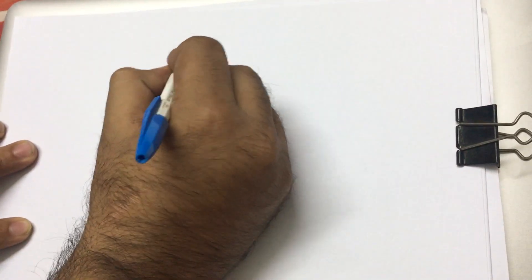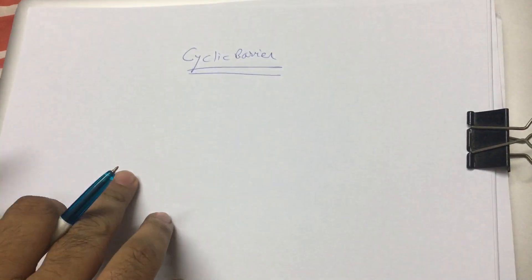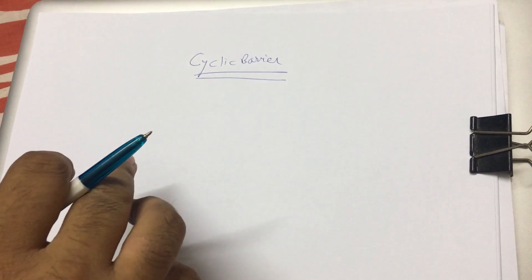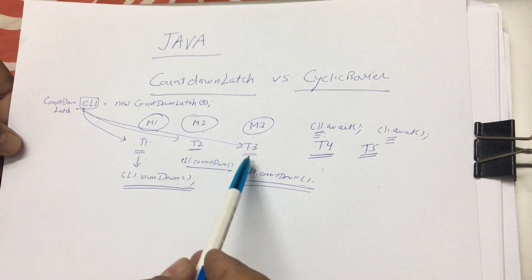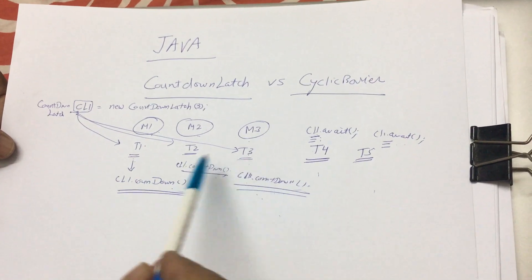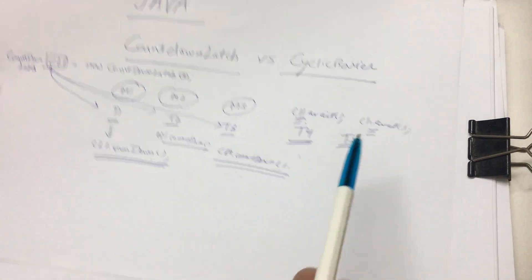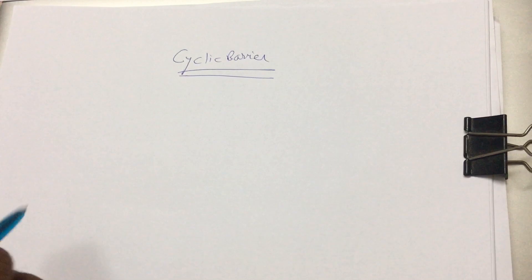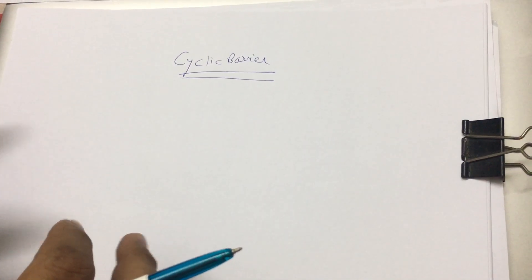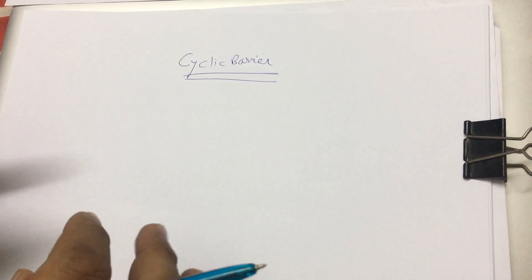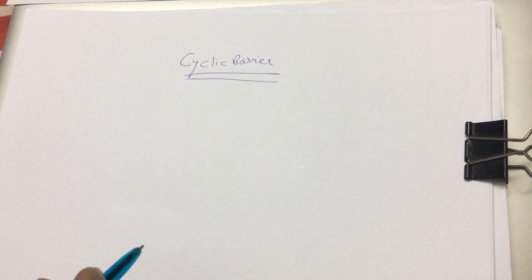In the case of CountDownLatch, there are two different thread types — ones doing the countdown and others doing the await. But with CyclicBarrier, all threads wait for each other. There is no countdown method in CyclicBarrier — there is only the await method.